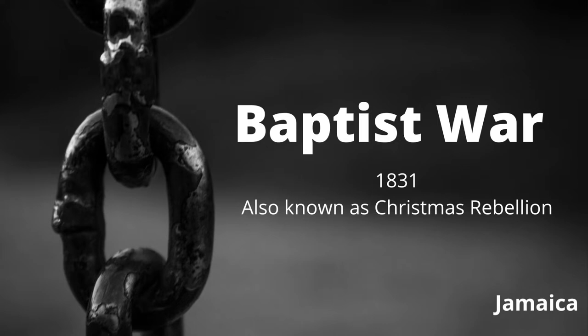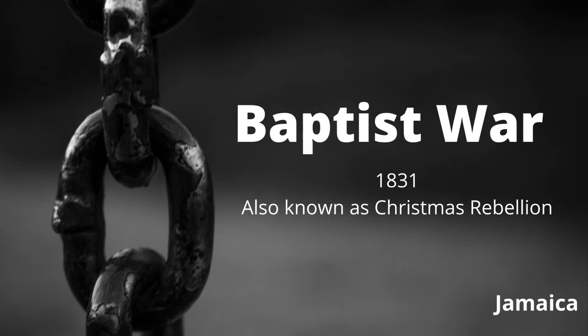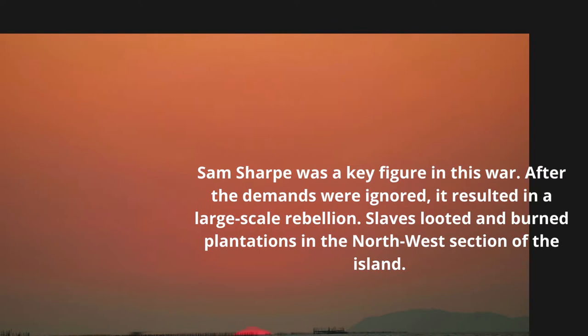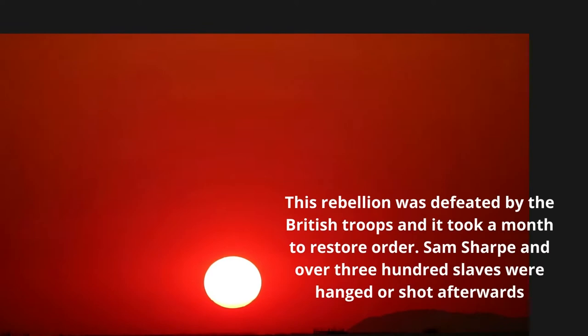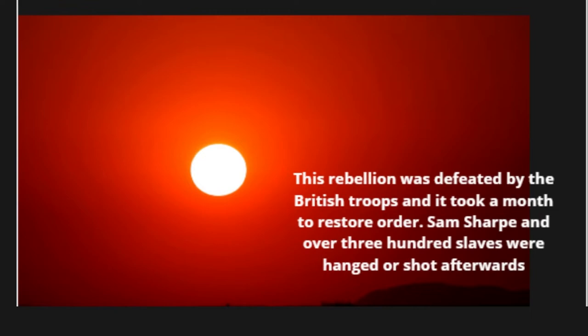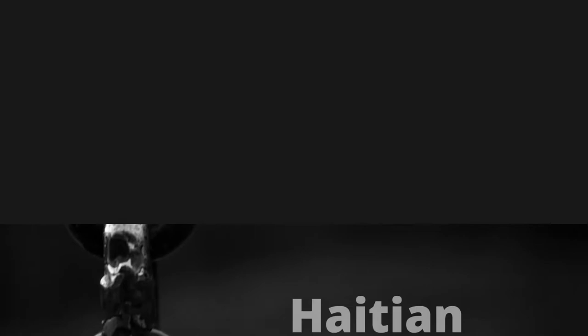The Baptist War happened in 1831. Initially, this was a Christmas strike for wages and better working conditions. Sam Sharp was a key figure in this war. After the demands were ignored, it resulted in a large-scale rebellion. Slaves looted and burned plantations in the northwest section of the island. This rebellion was defeated by the British troops and it took a month to restore order. Sam Sharp and over 300 slaves were hanged or shot afterwards. This was one of the largest slave rebellions, which contributed to Britain's abolition of slavery in 1833.